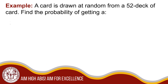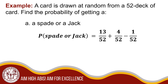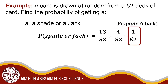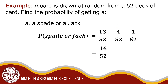A card is drawn at random from a 52-card deck. Find the probability of getting a spade or a jack. The probability of getting a spade is 13 out of 52, and the probability of drawing a jack is 4 out of 52. Subtract 1 over 52 as their intersection (the jack of spades). Therefore, the probability of getting a spade or a jack is 16 over 52, or in lowest terms, 4 out of 13.